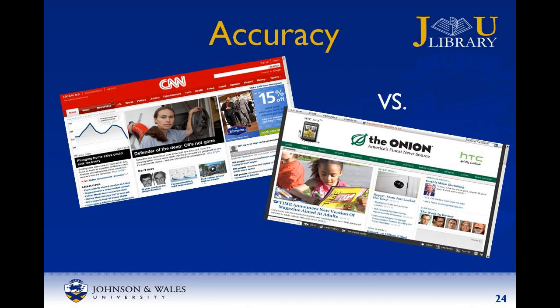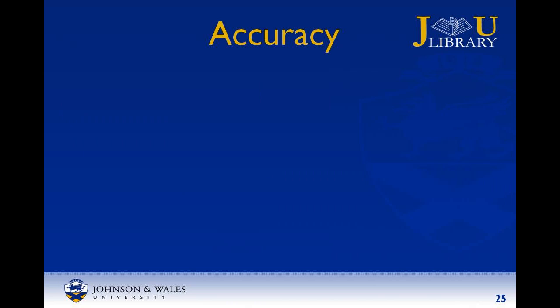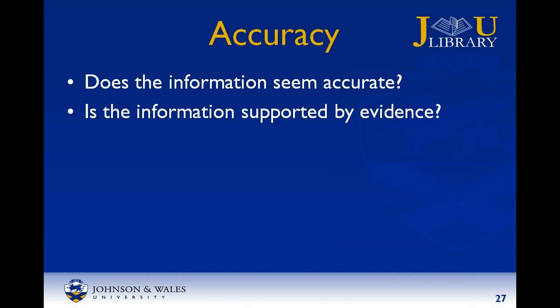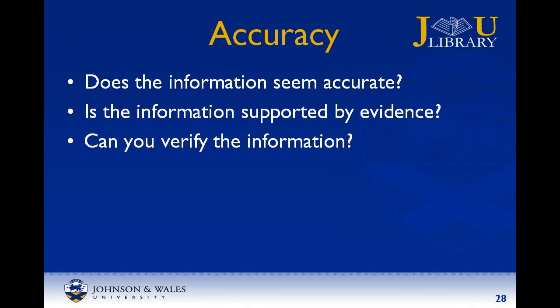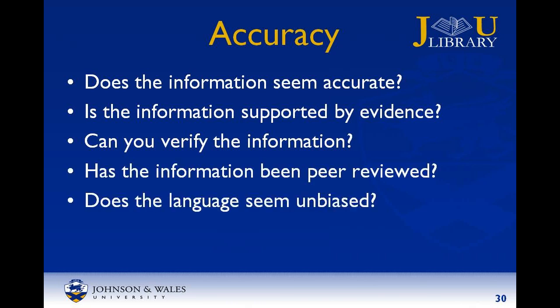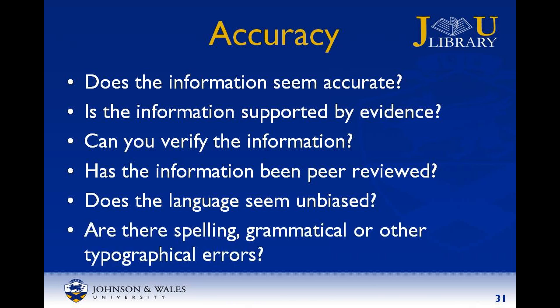The second A in CRAP is for accuracy. Accuracy refers to the reliability, truthfulness, and correctness of the information. To determine accuracy, ask yourself: based on your knowledge, does the information seem accurate? Is the information supported by evidence? Can you verify any of the information in another source? Has the information been peer-reviewed? Does the language or tone seem unbiased? Are there spelling, grammar, or other typographical errors?